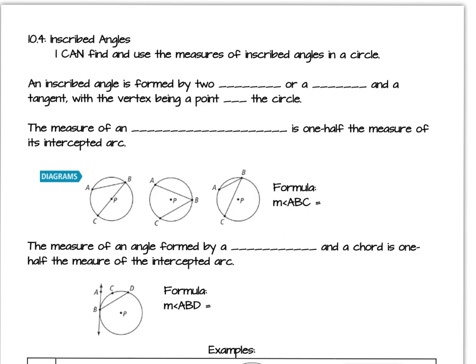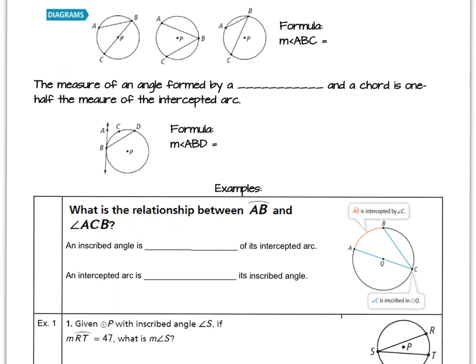For the second part of 10.4, looking at inscribed angles, we're going to focus on the second definition of inscribed angles. You recall from day one, if you look at the measure of the angle formed by a tangent and a chord, it's one half the measure of the intercepted arc. So let's take a look in more detail at this picture.